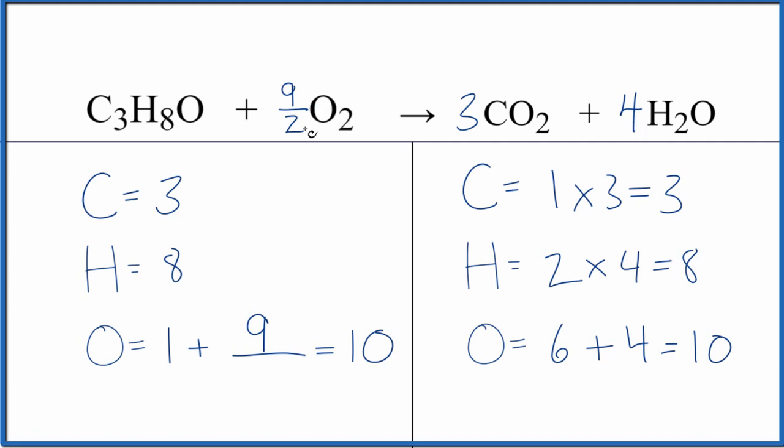Some teachers don't like having this fractional coefficient here. What you can do is multiply everything by two, and we'll still have the same ratio, but we'll get rid of the fraction. So we multiply two times each coefficient here, and this is the same ratio, we just have whole numbers.